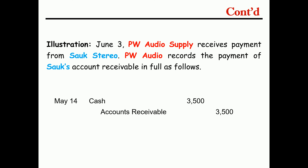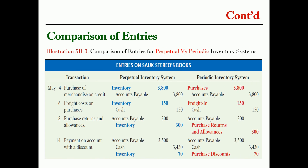Therefore, the cost of goods sold in the periodic system requires a physical count. There is no need to record the cost of goods sold at the time of sale in the periodic system. In the perpetual system, in every sale, the cost of goods sold is recorded. This includes purchasing of merchandise on credit in the periodic and perpetual systems.